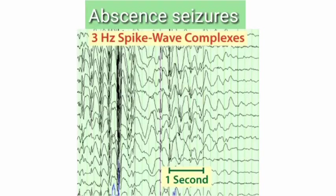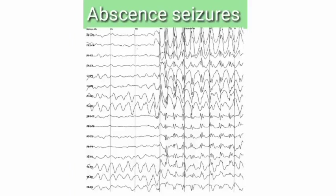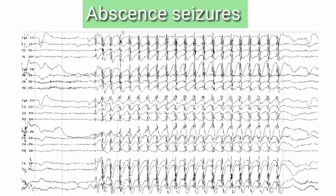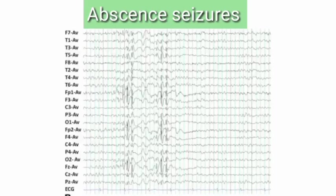In absence seizures, the typical EEG is 3 Hertz spike and wave complexes — meaning in one second you get three spikes and three waves. The pattern goes: spike, then wave, then spike, then wave, then spike, then wave — and this repeats again and again. This 3 Hertz spike and wave pattern is typically seen here and is the hallmark finding for absence seizures.